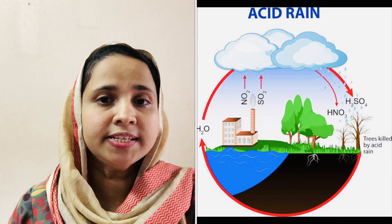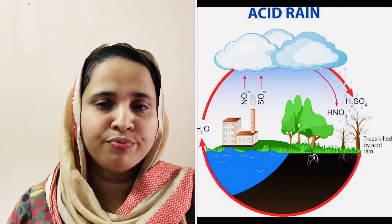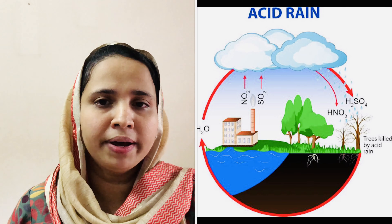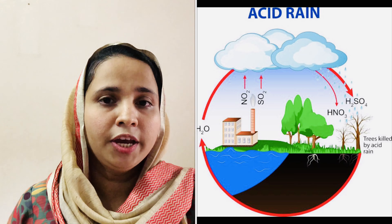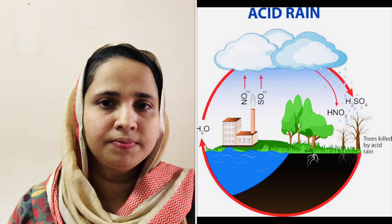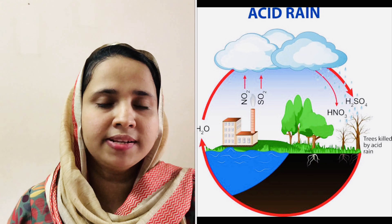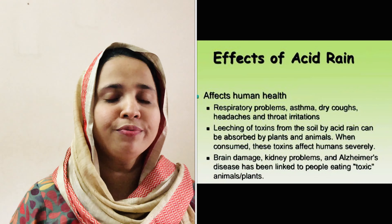The acid droplets formed in the air get suspended in water vapors to form acid fog, which gets dispersed far and wide by air currents. In cool weather, the acid fog precipitates as acid rain.